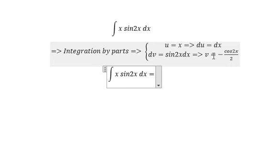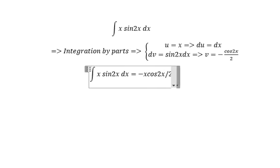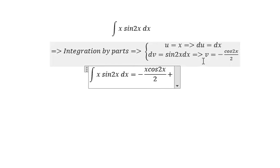u multiply with v. So we have x multiplied with negative cosine 2x over 2. Because we have a negative here, this becomes positive.